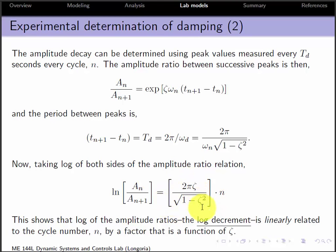is some constant. Look at this. It only depends on the damping ratio times the cycle number. So if you plot the log of the amplitude ratio as a function of cycle number, the slope gives you ζ.